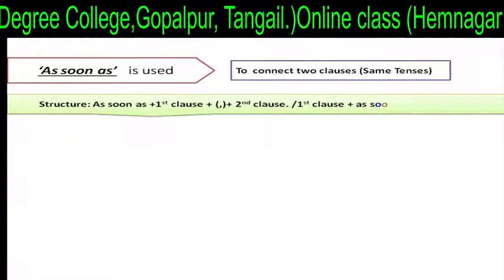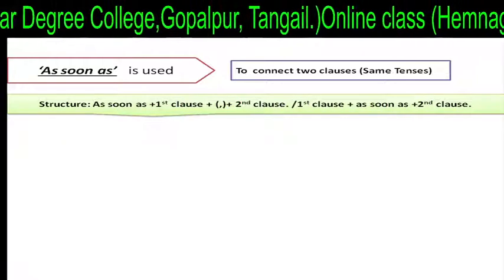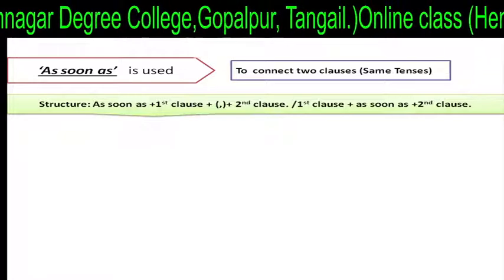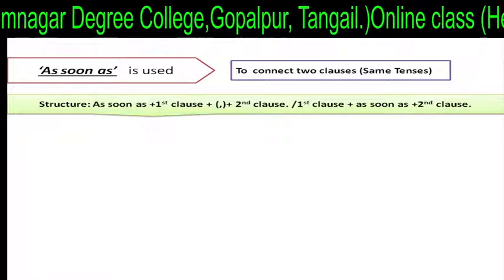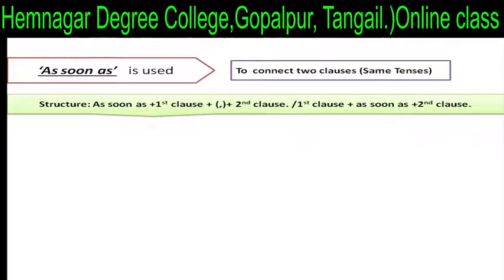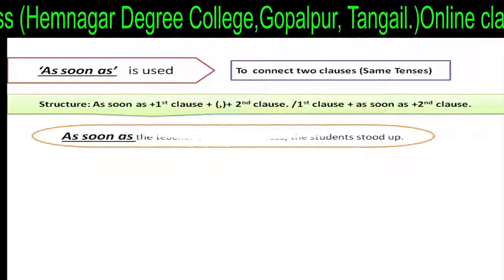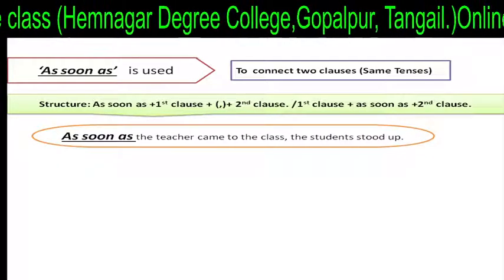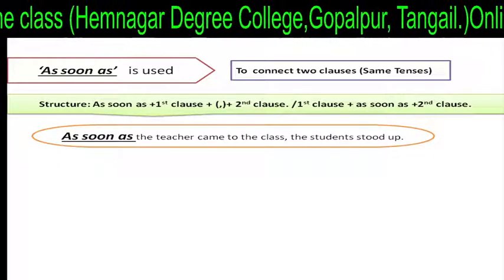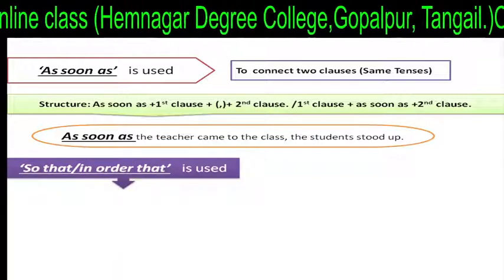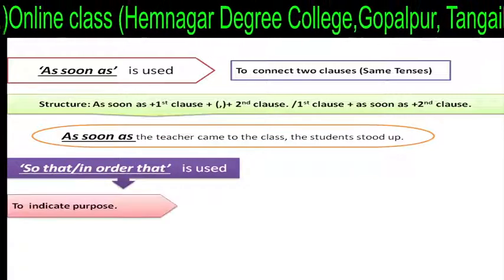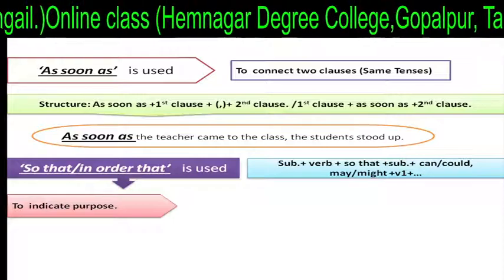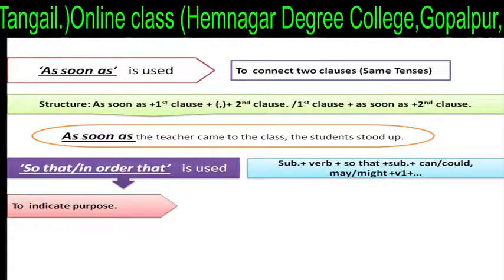As soon as is used to connect two clauses. Structure: 'as soon as' plus first clause plus comma plus second clause, or first clause plus 'as soon as' plus second clause. For example: 'As soon as the teacher came to the class, the students stood up.' So that or in order that is used to indicate purpose. Structure: subject plus verb plus 'so that' plus subject plus can/may/might plus verb plus extension.